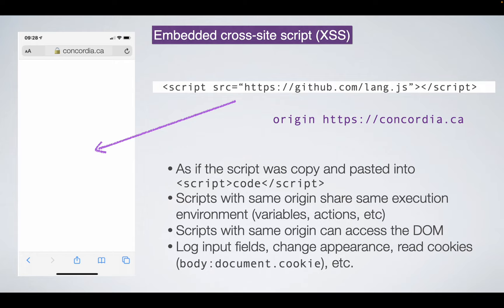Because people don't realize this, it creates all sorts of problems. If that JavaScript was malicious, it now has the origin of concordia.ca. Everything else in the DOM tree on that website also has that same origin — so this malicious script can change everything on the website. It could add hidden elements, log passwords as you type them, and send that data anywhere it wants.